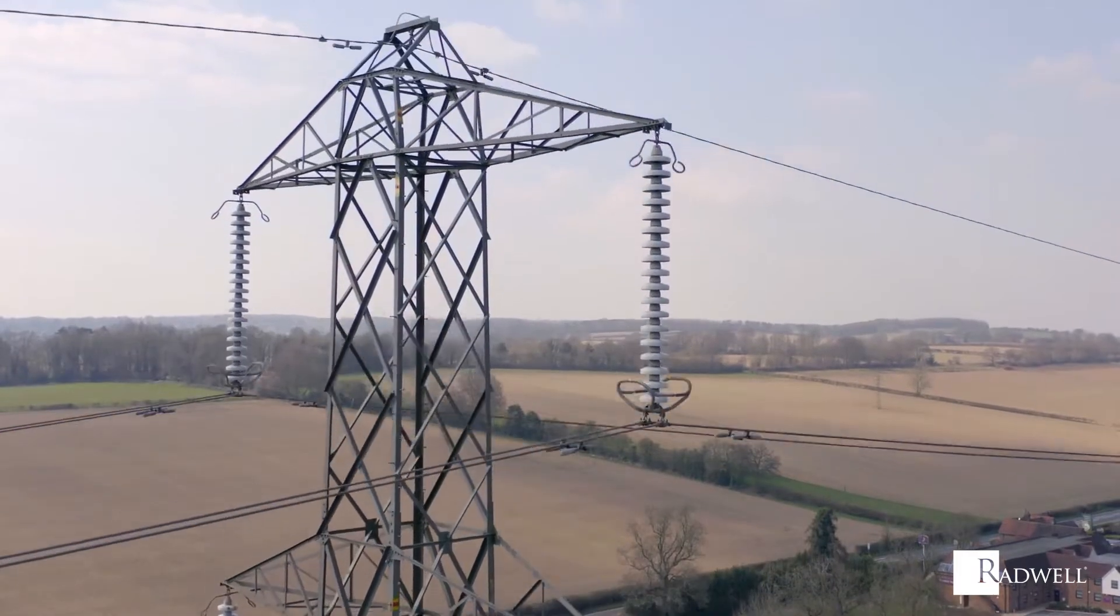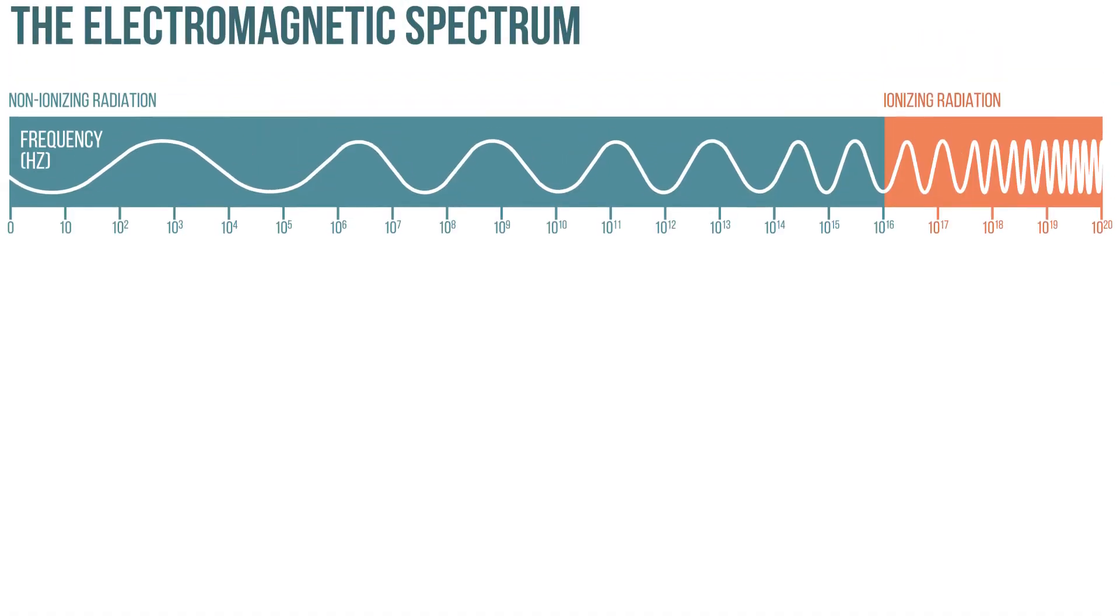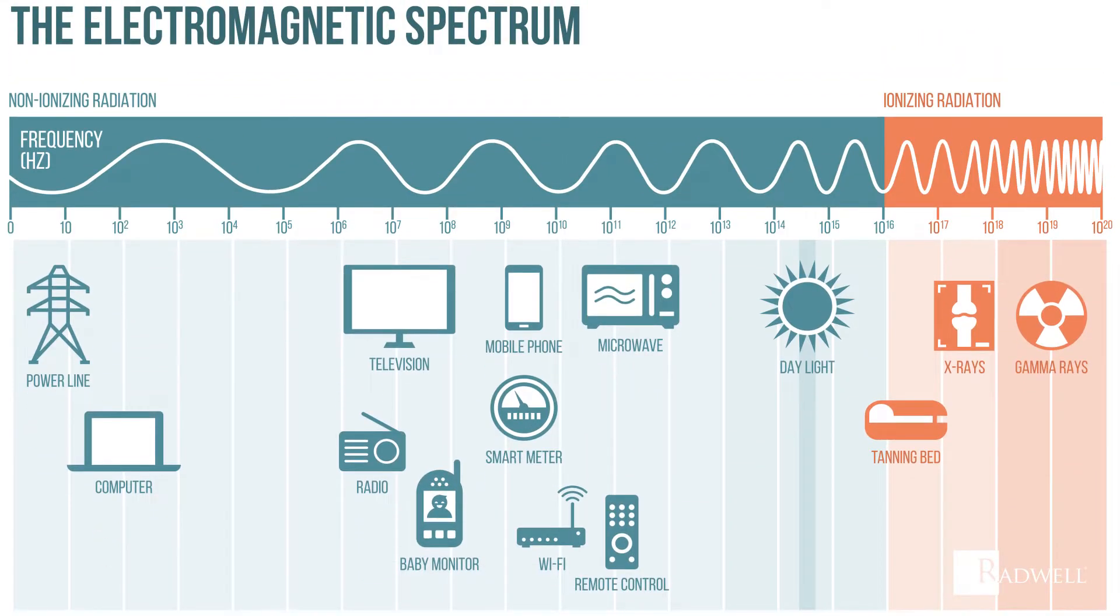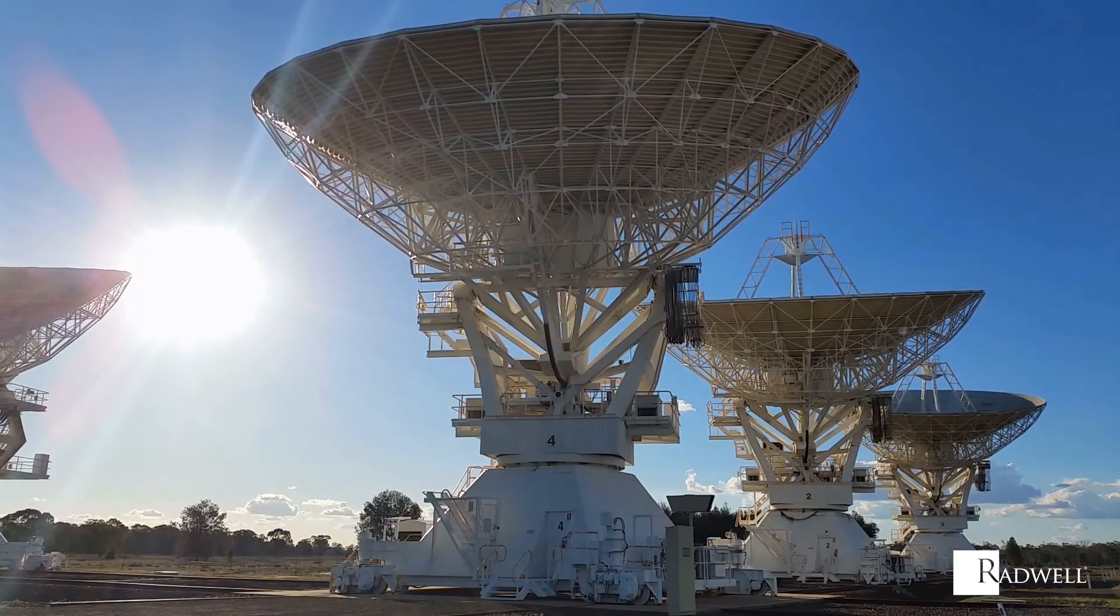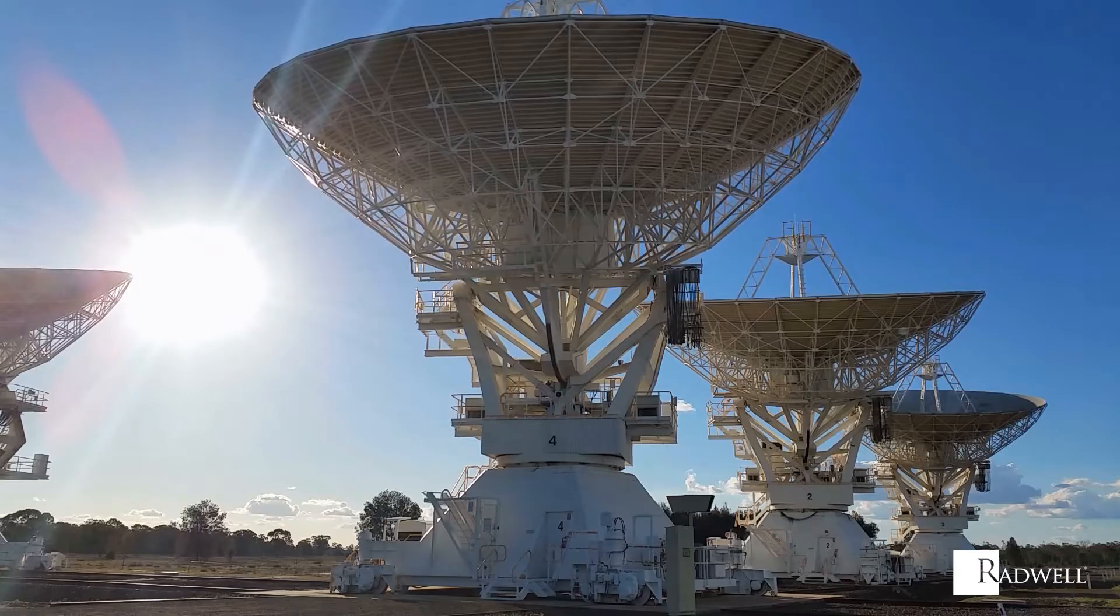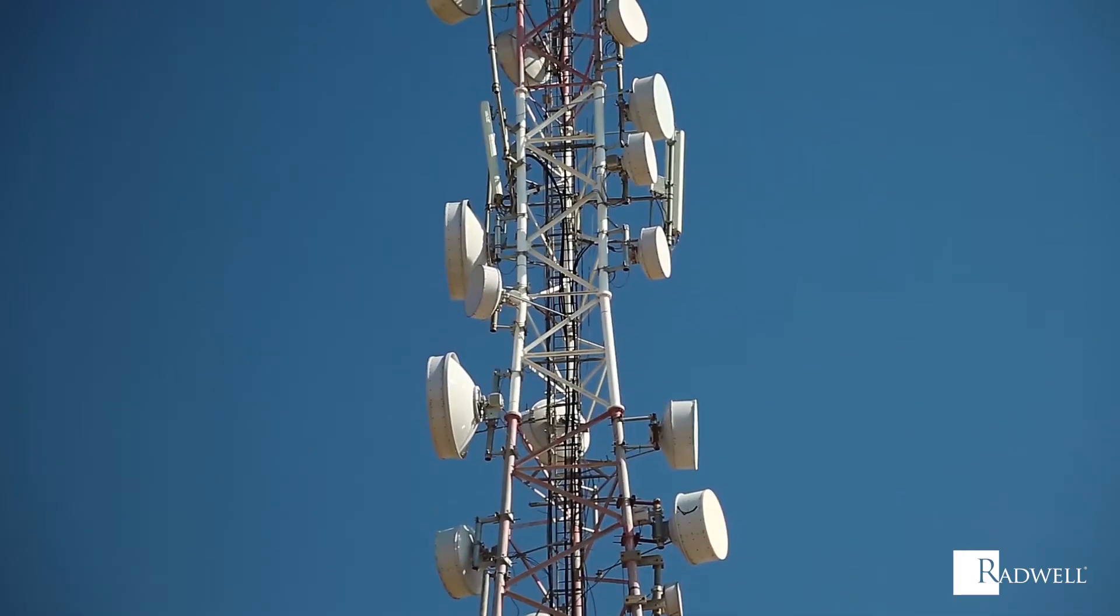Electromagnetic fields are typically grouped into two categories depending on their frequency. They are non-ionizing and ionizing. Non-ionizing is a low level of radiation and consists of low to mid-frequency electromagnetic fields, including static fields. They are generally considered harmless to humans.